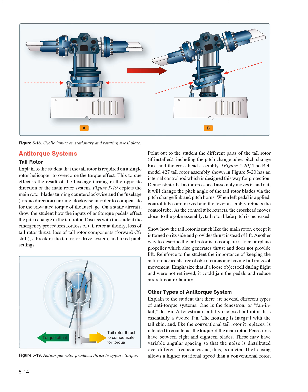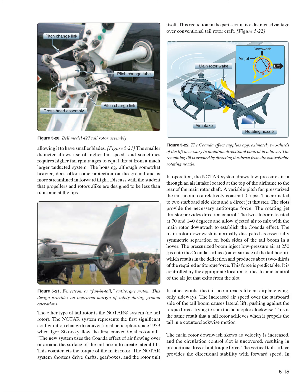There are several different types of anti-torque systems. One is the fenestron, or fan-in-tail design. A fenestron is a fully enclosed tail rotor — essentially a ducted fan. The housing is integral with the tail skin and is intended to counteract the torque of the main rotor. Fenestrins have between 8 and 18 blades, which may have variable angular spacing so that the noise is distributed over different frequencies and thus is quieter. The housing allows a higher rotational speed than a conventional rotor, allowing it to have smaller blades. The smaller diameter requires higher fan RPM ranges to equal thrust from a much larger unducted system. The housing, although somewhat heavier, does offer some protection on the ground and is more streamlined in forward flight.